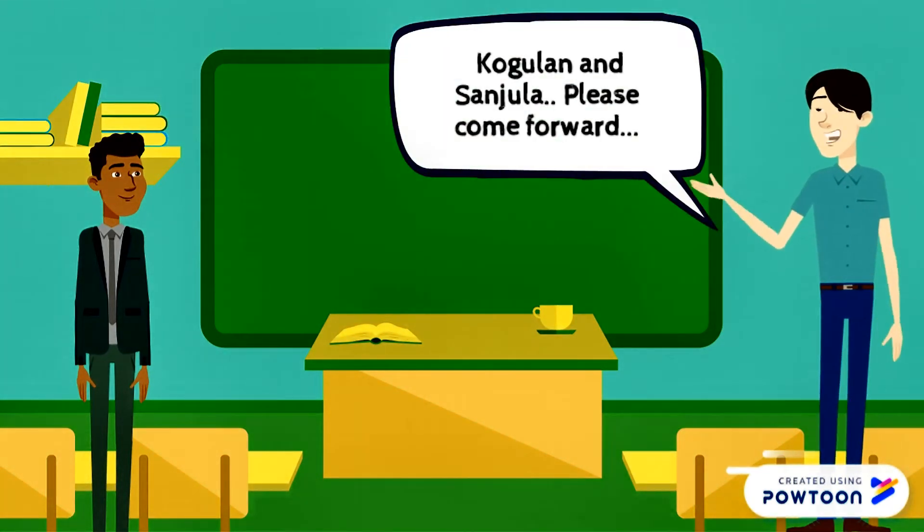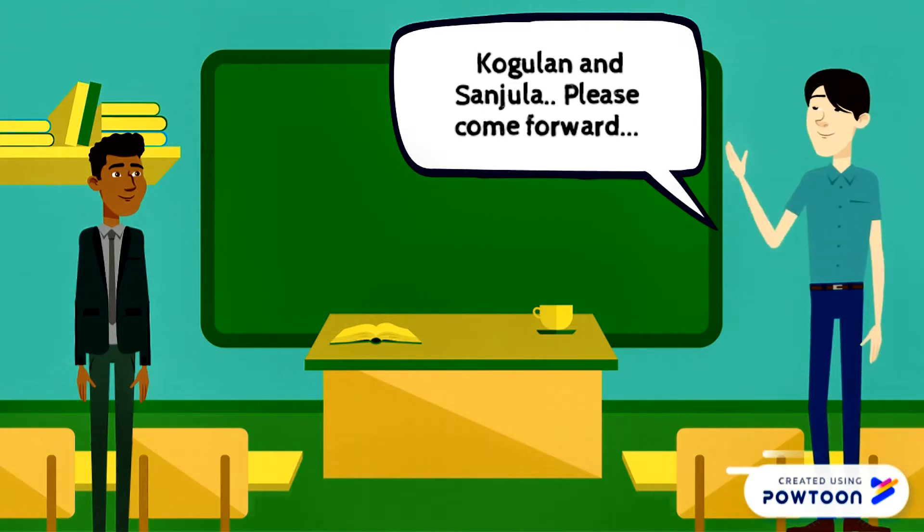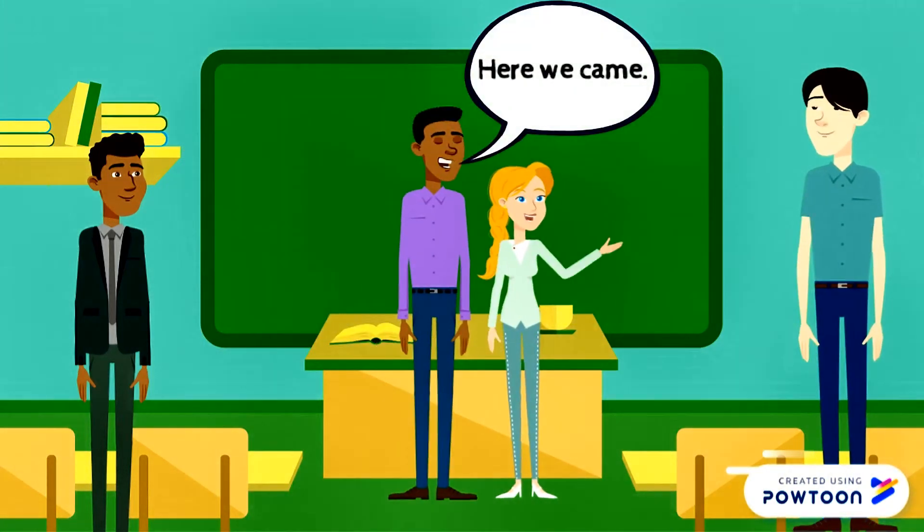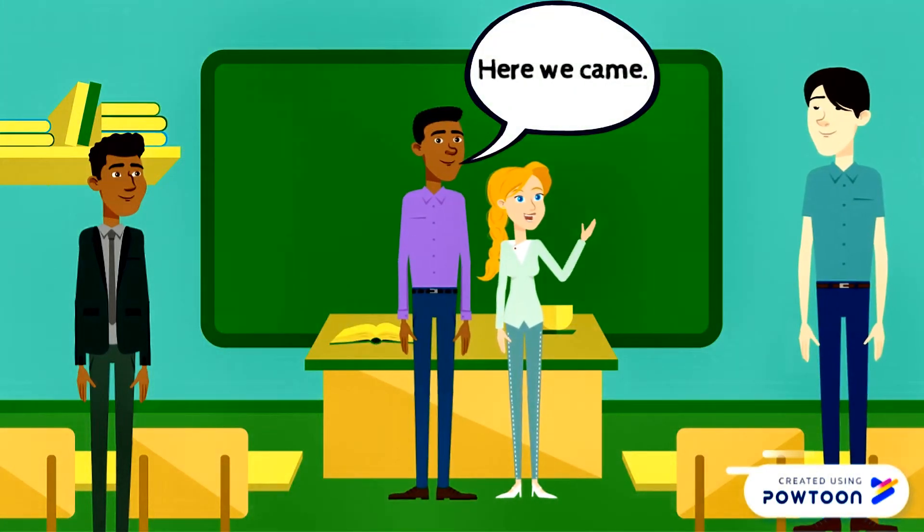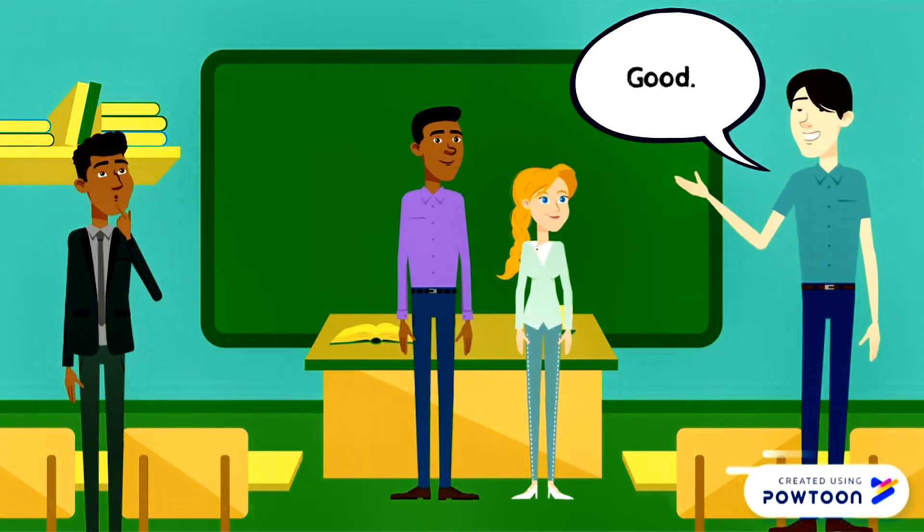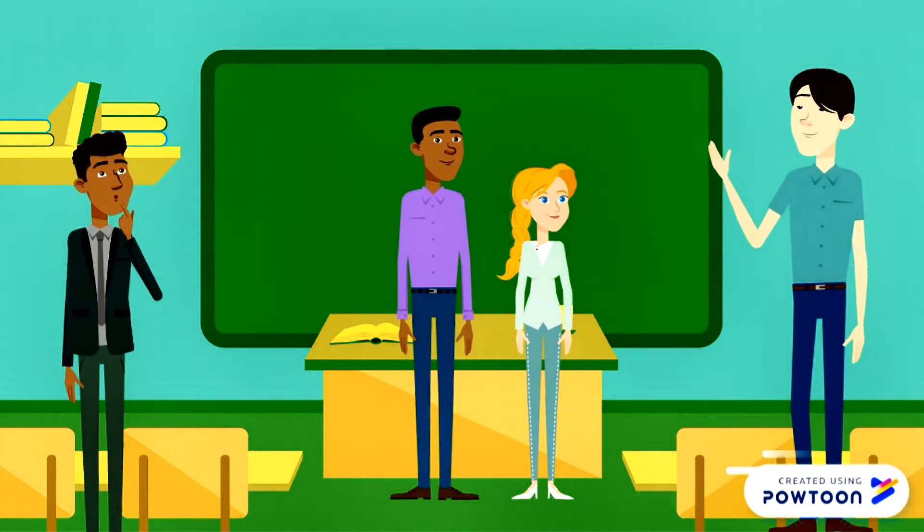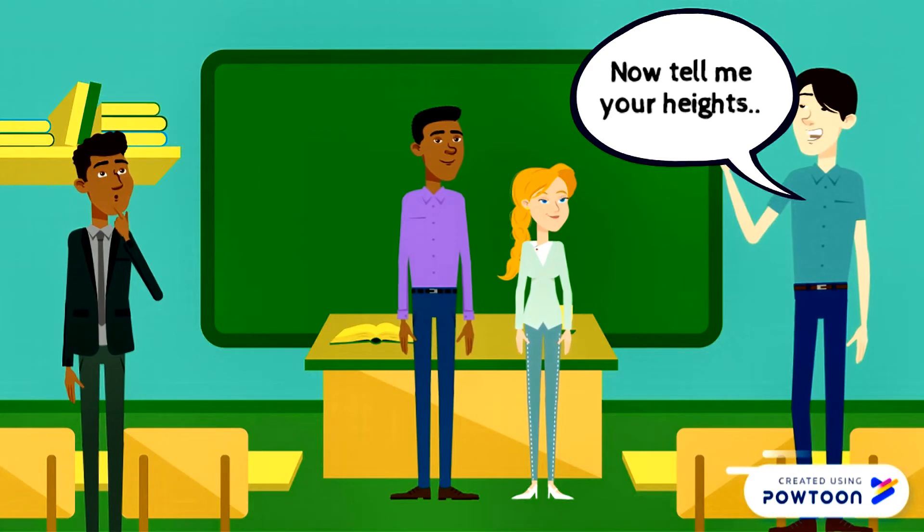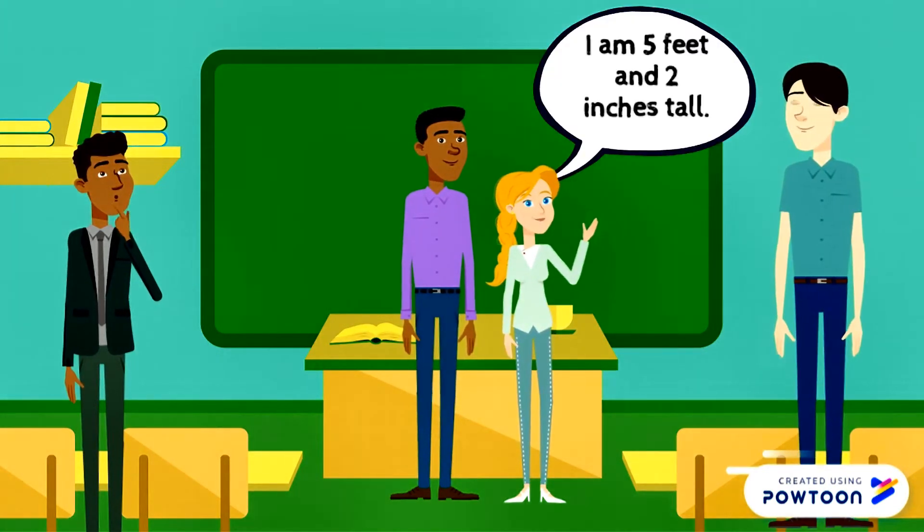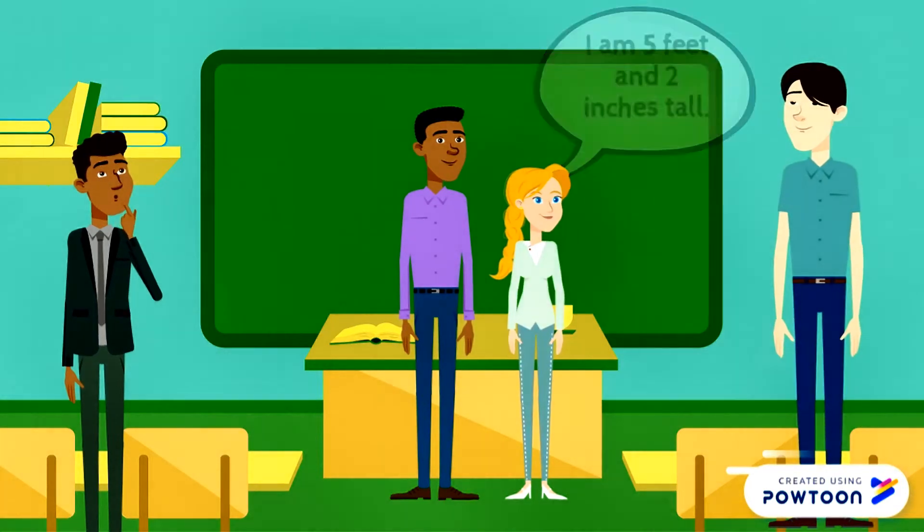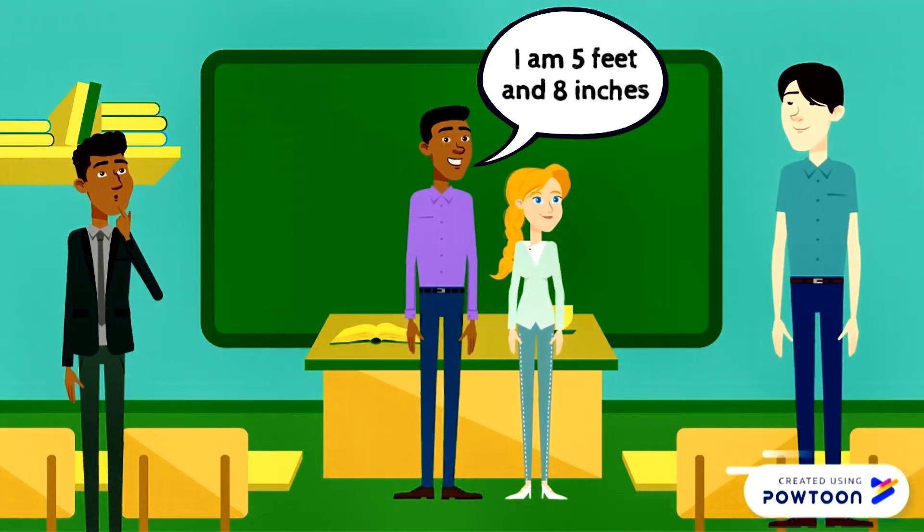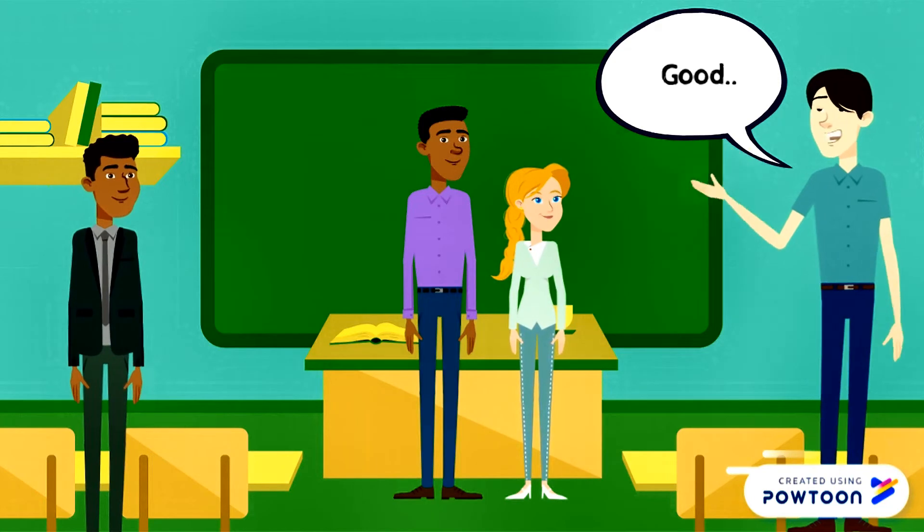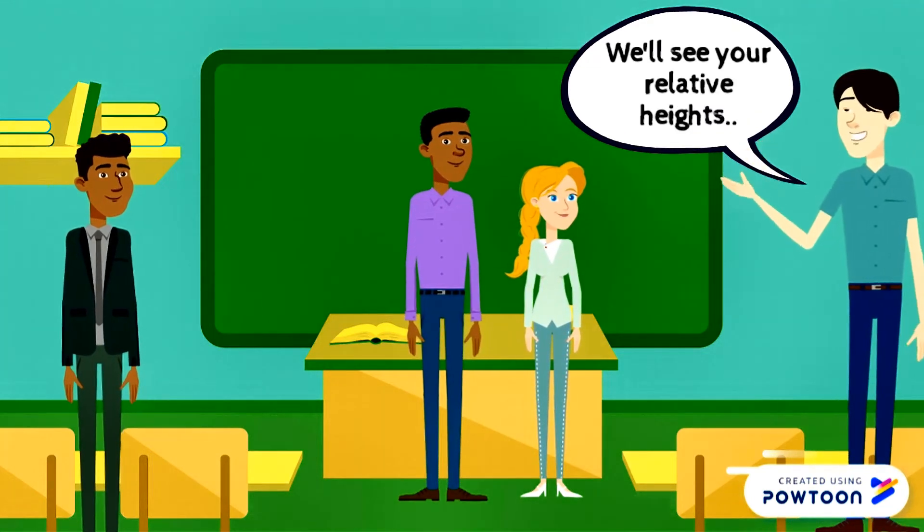Kogulan and Sanjula, please come forward here. We came. Good. Now tell me your heights. I am 5 feet and 2 inches tall. I am 5 feet and 8 inches. Good, we'll see your relative heights.